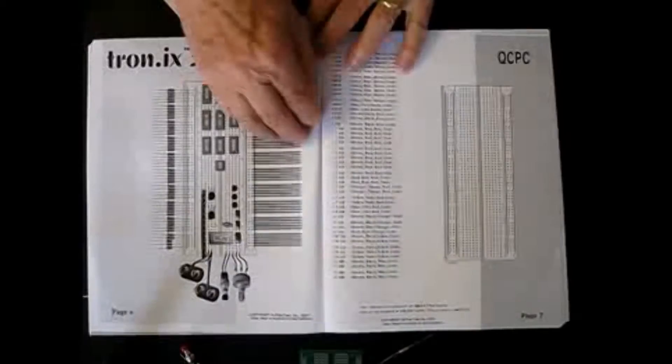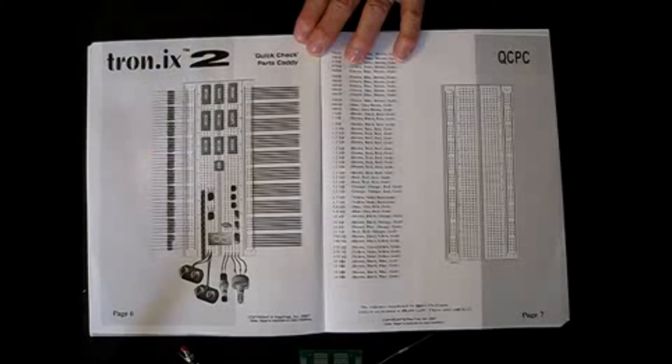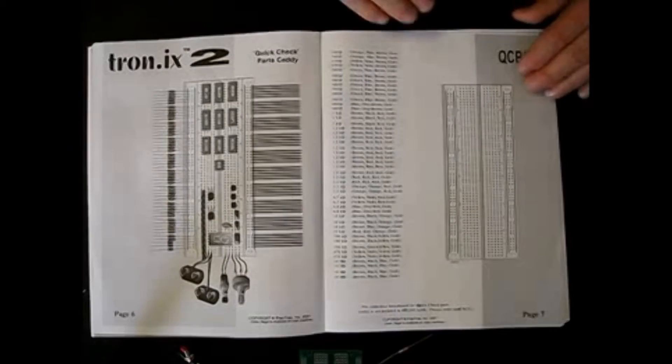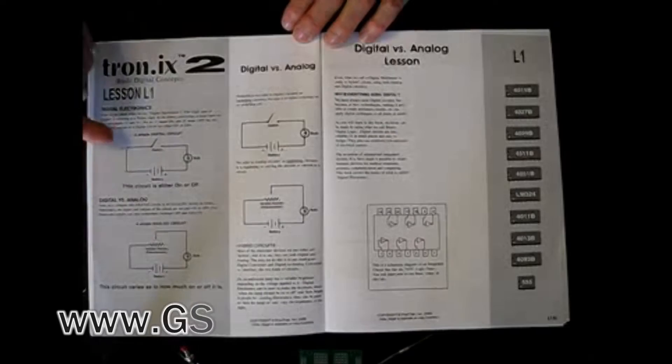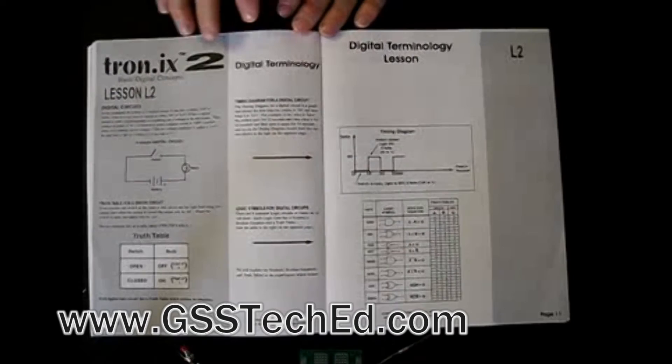As you turn the page, we show you that you can take all of the parts that are supplied in this lab and plug them into an extra solderless breadboard and use that as an inventory to keep your parts in order. Turning the page, our first lesson has to do with what's the difference between digital and analog, and we explain to you the differences here.